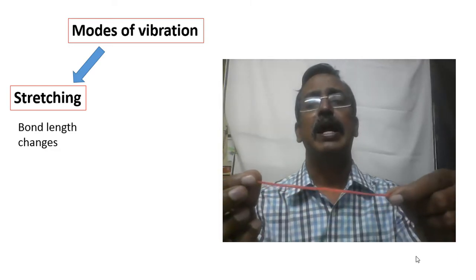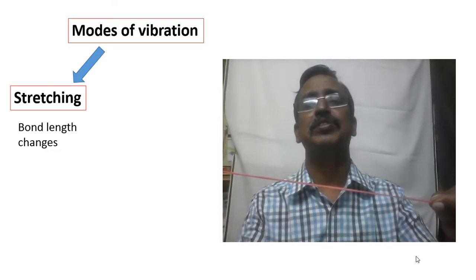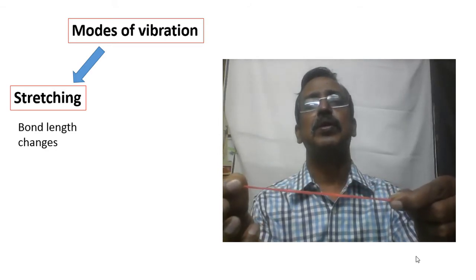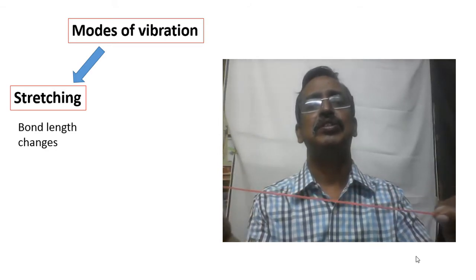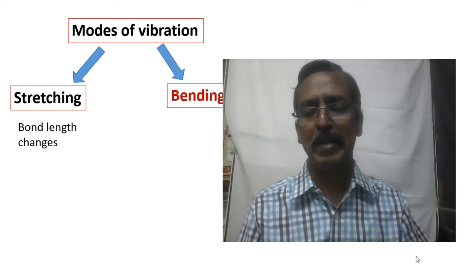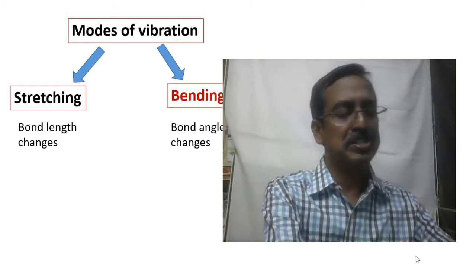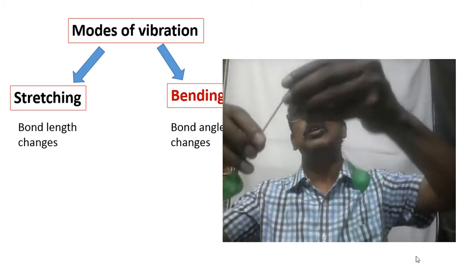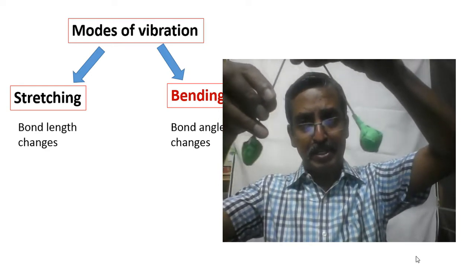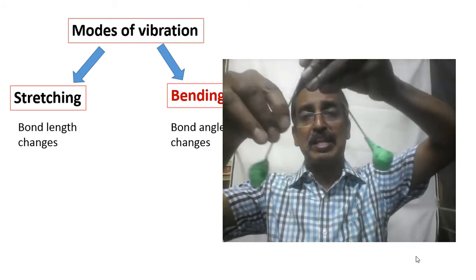During stretching, the bond length changes. When the bond is stretched, the length increases; when the bond is compressed, the length decreases. This is known as stretching. During bending, the bond angle changes — if we consider two bonds, the angle between them changes.